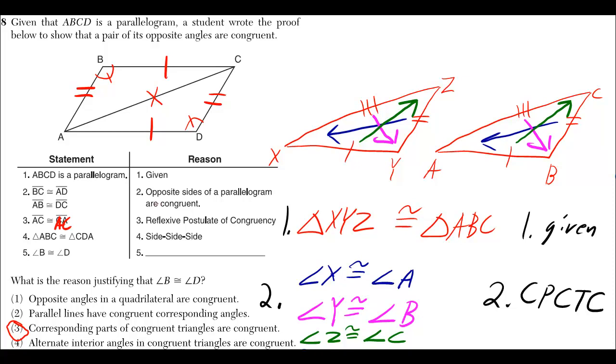So, our reason, we could just put CPCTC, and don't quote me on this, but I think you get full credit for the reasons by just putting that abbreviation instead of putting corresponding parts of congruent triangles are congruent. You can just put CPCTC.